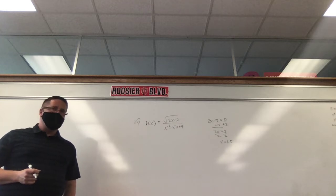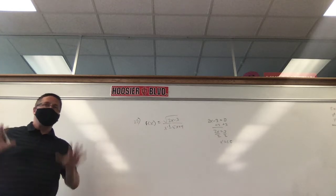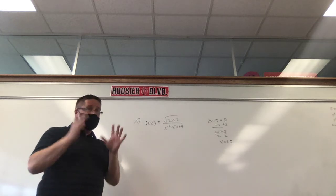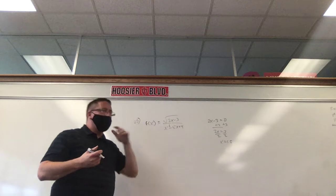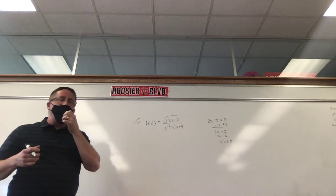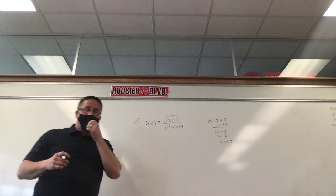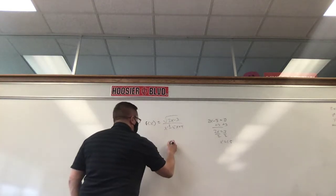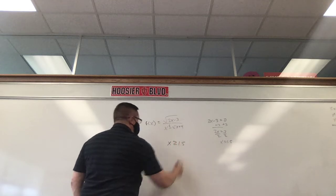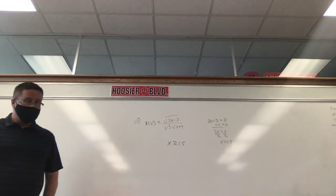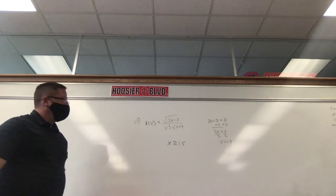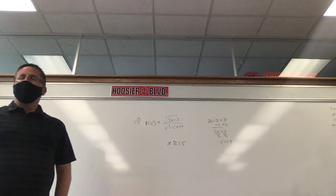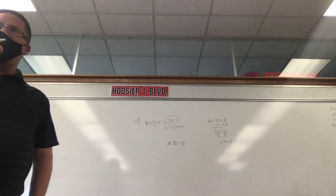Can I plug in numbers bigger or smaller than 1.5? Numbers greater than or equal to 1.5 work. 10 is okay — 2 times 10 minus 3 is a positive number. Anything smaller than 1.5, you're going to get a negative inside the radical, which is imaginary. So x has to be bigger than or equal to 1.5. Now we're not done yet — we haven't looked at the bottom.